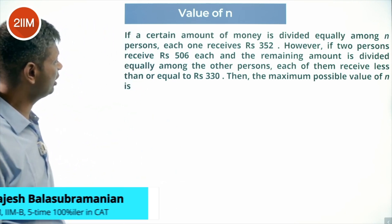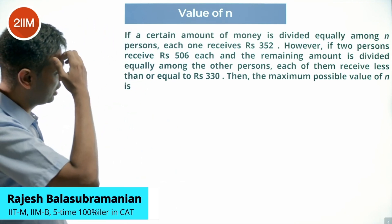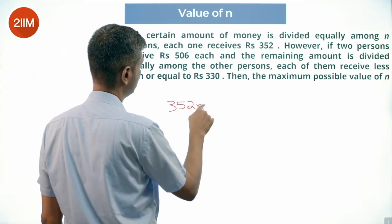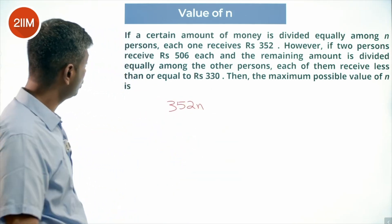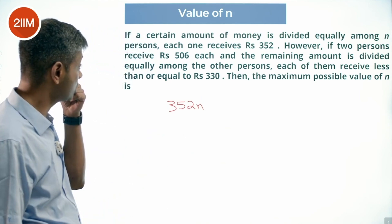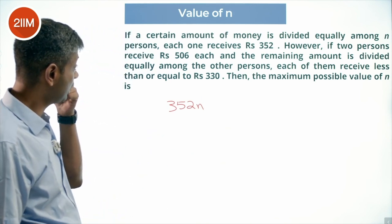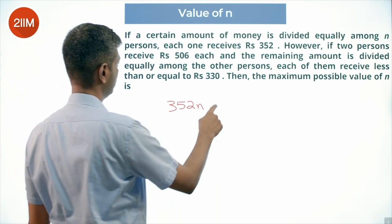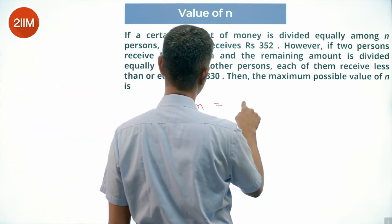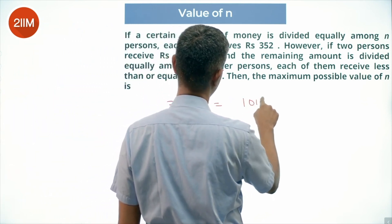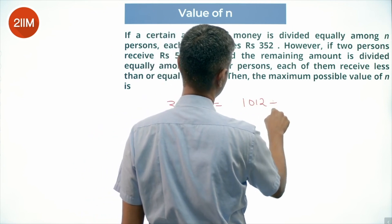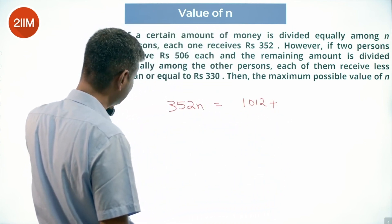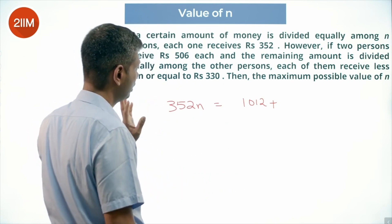A certain amount of money is divided equally among n persons; each one receives 352, so the total amount of money is 352n. However, if two persons receive 506 each, that accounts for 506 into 2, which is 1012.